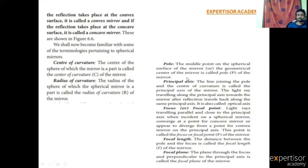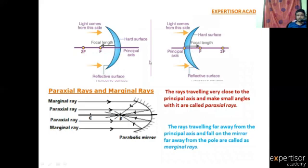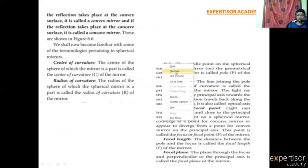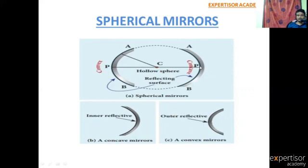Next, the Pole: the middle point on the spherical surface of the mirror, or the geometrical centre of the mirror, is called the pole of the mirror. Here, this middle point of the mirror is the pole.